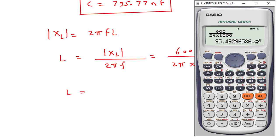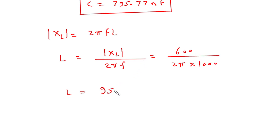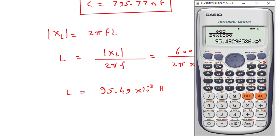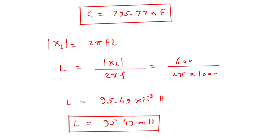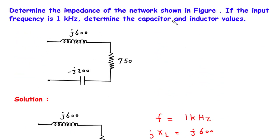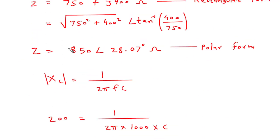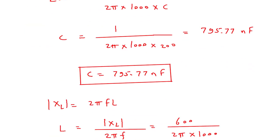So L is equal to 95.49 into 10 to the power minus 3 henry, or we can say 95.49 millihenry. So this is the value of inductance L and this is the value of capacitance C. To summarize: determine the impedance of the network — if the input frequency is 1 kilohertz, determine the capacitor and inductor value. The value of impedance Z is in polar form, C is 795.77 nanofarad, and L is 95.49 millihenry.